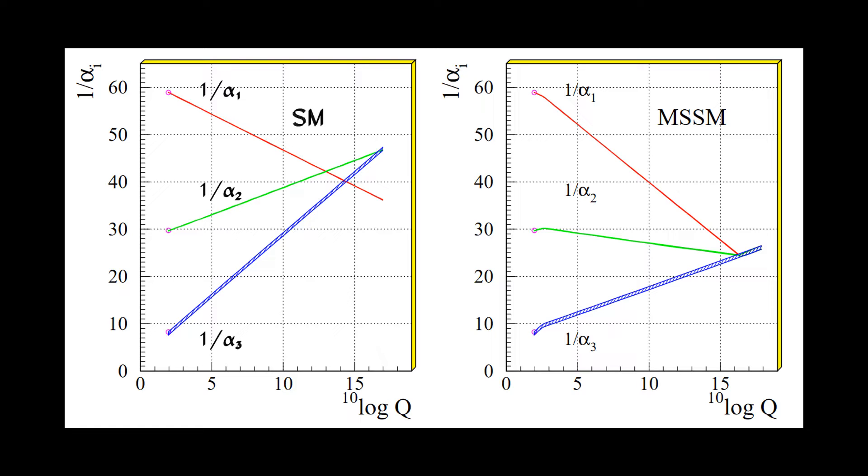In SUSY GUTs, the GUT scale is of order 3 times 10 to the 16th GeV, as compared to the GUT scale in non-SUSY GUTs, which is of order 10 to the 15th GeV. Hence, the dimension 6 baryon number violating operators are significantly suppressed in SUSY GUTs.